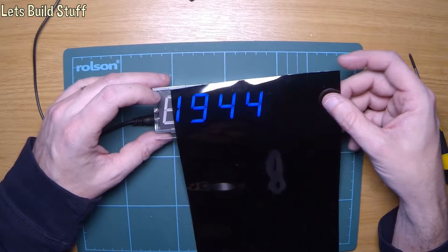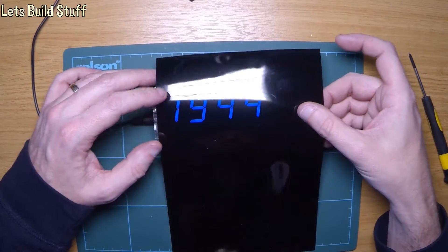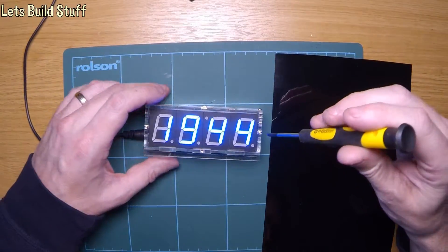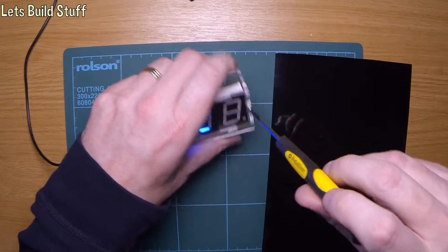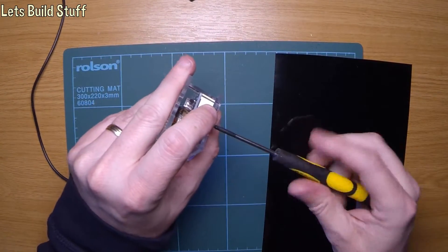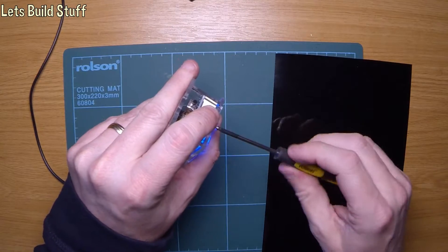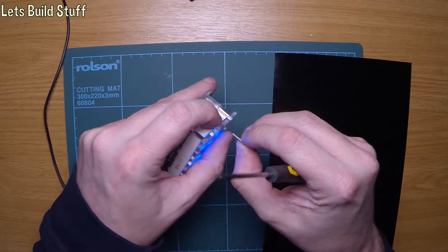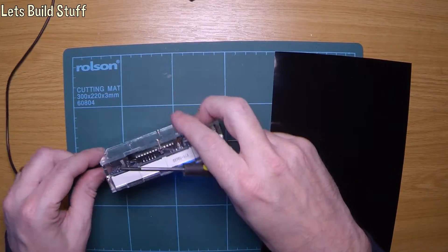The first thing I need to do is take this clock apart again, which is just four little - well, two little screws on the front, and the front will come off. Let's take the power out as well.